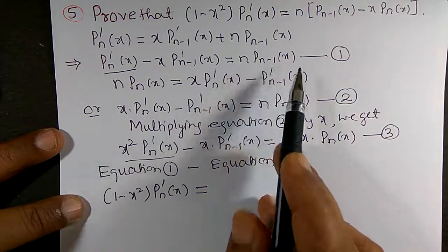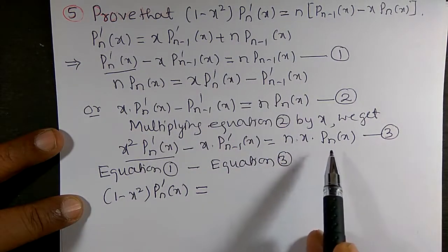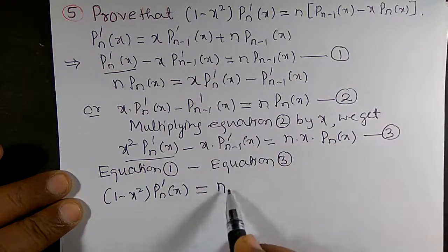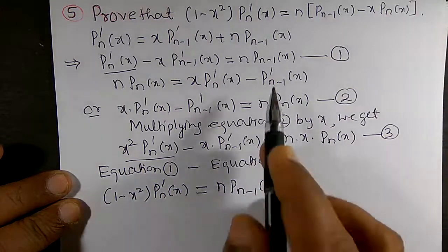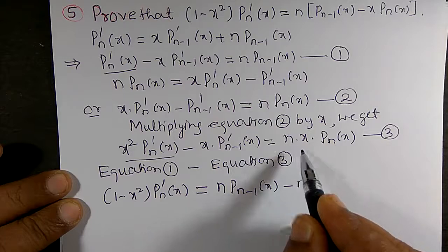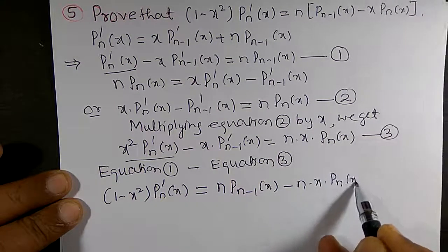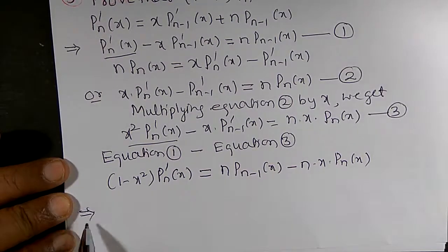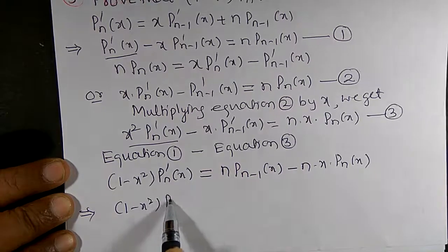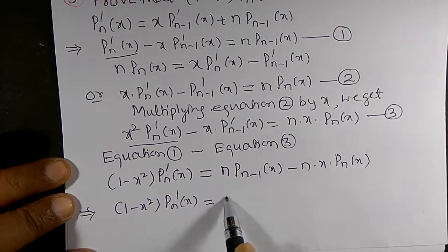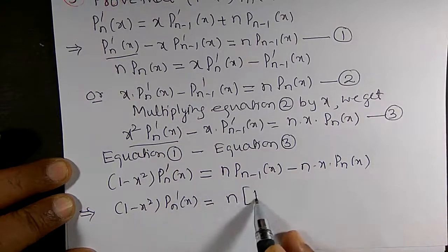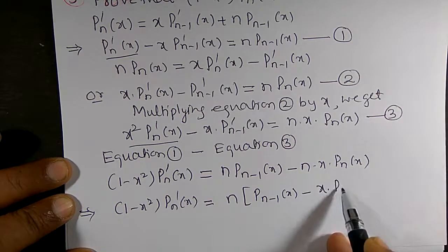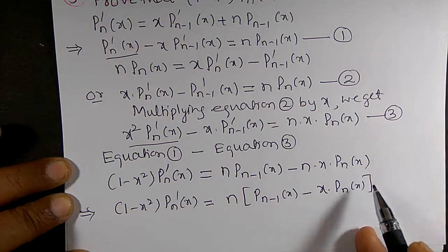That is equal to n · Pₙ₋₁(x) minus n · x · Pₙ(x). Taking n as common, we get: (1 - x²) · P'ₙ(x) = n · Pₙ₋₁(x) - x · Pₙ(x).